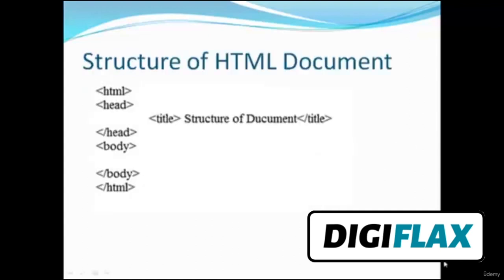Now let's see the structure of an HTML document. This is the basic structure. Every HTML document starts with an HTML tag — a tag means an element enclosed within angle brackets. After the HTML tag there is the head tag. The head tag contains several sub-elements like title, style, script, meta, and link.